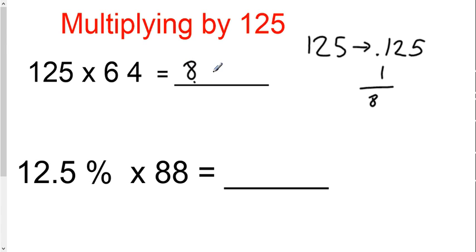Now at first glance, you might want to add two zeros, but in this case you're going to add three zeros because when I called 125 .125, I had to move the decimal three times. So I add three zeros or move the decimal three times. 8,000. There's your answer.